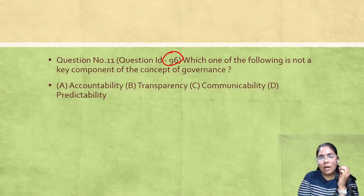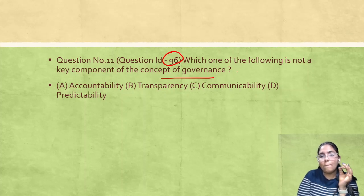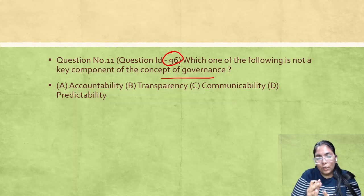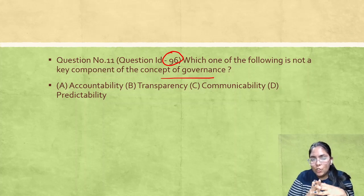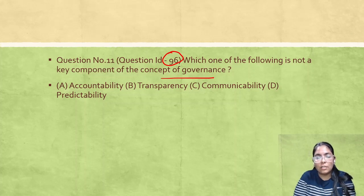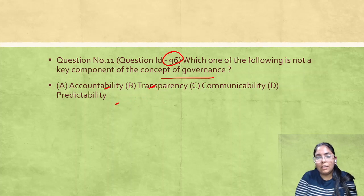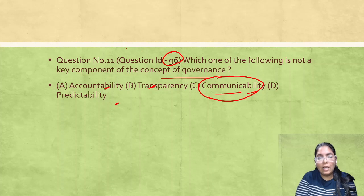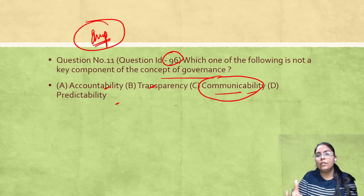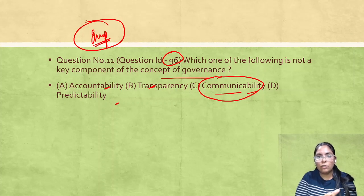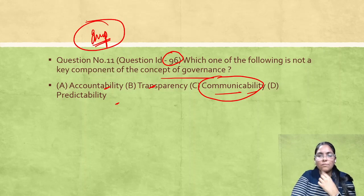Question ID 96: Which of the following is NOT a key concept of governance? Governance includes accountability, transparency, and predictability. The only option that does not belong is communicability. This is a very important question because good governance questions appear in every paper — especially for NTA UGC NET preparation, this is very common in previous year questions.